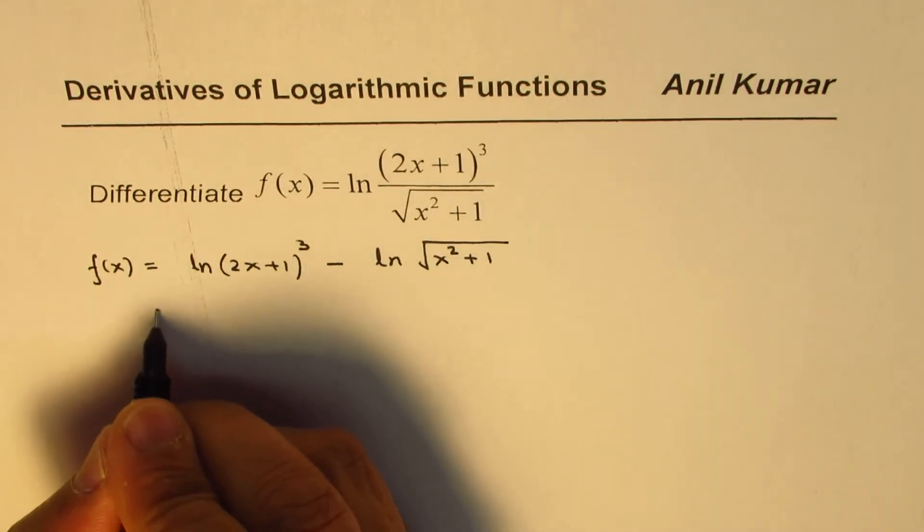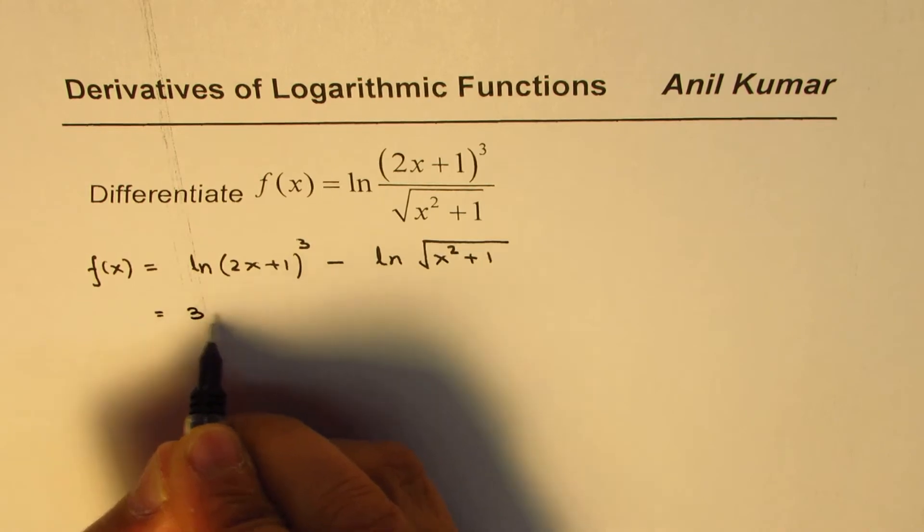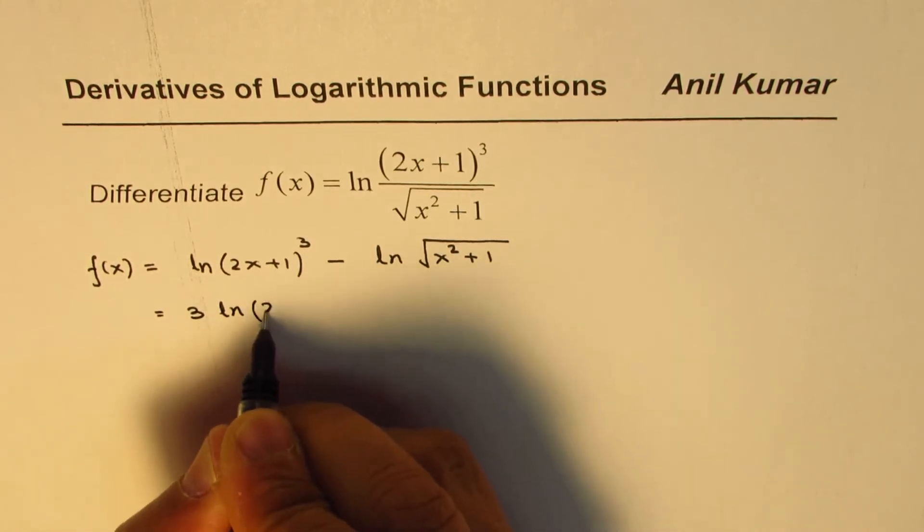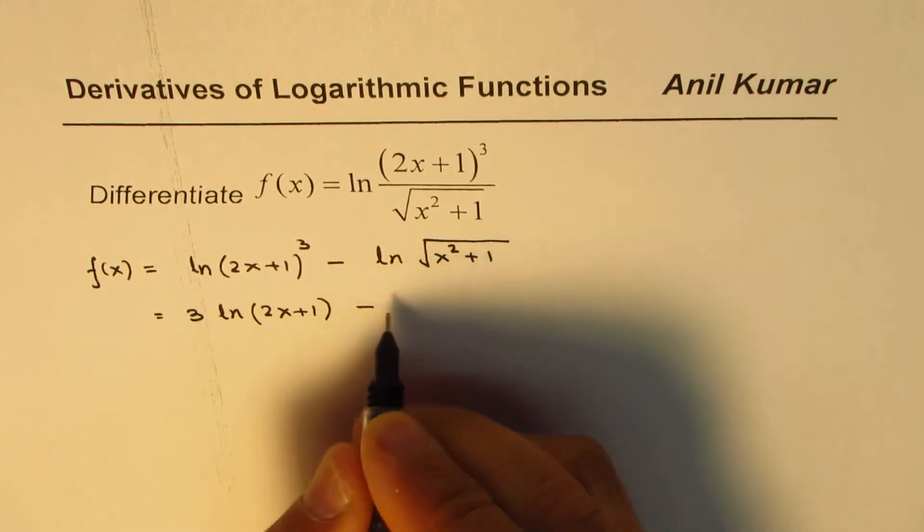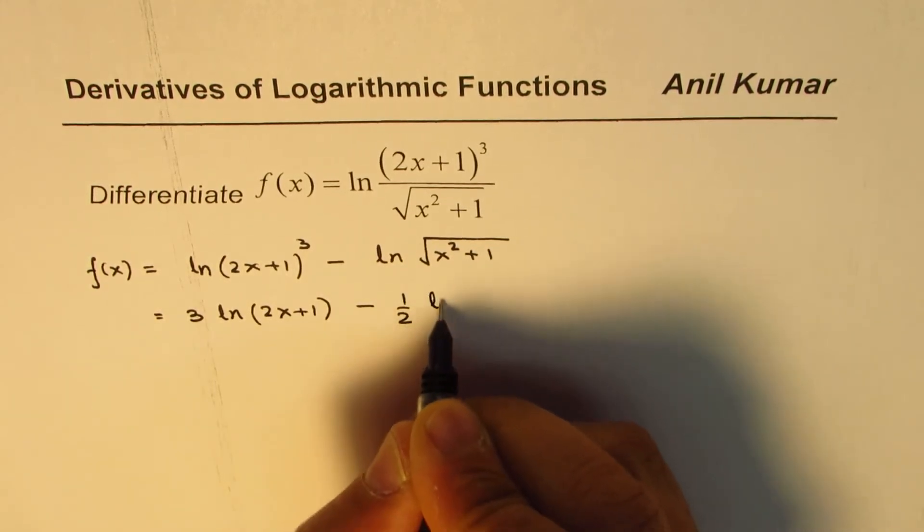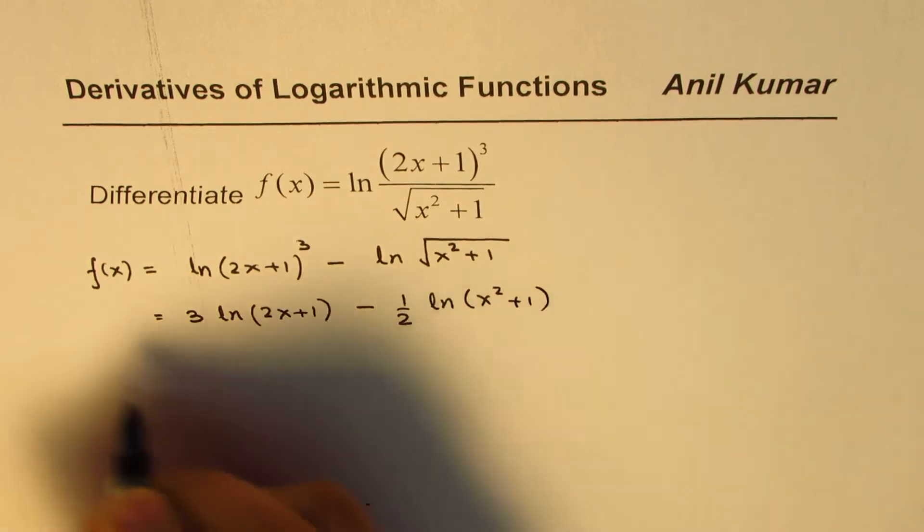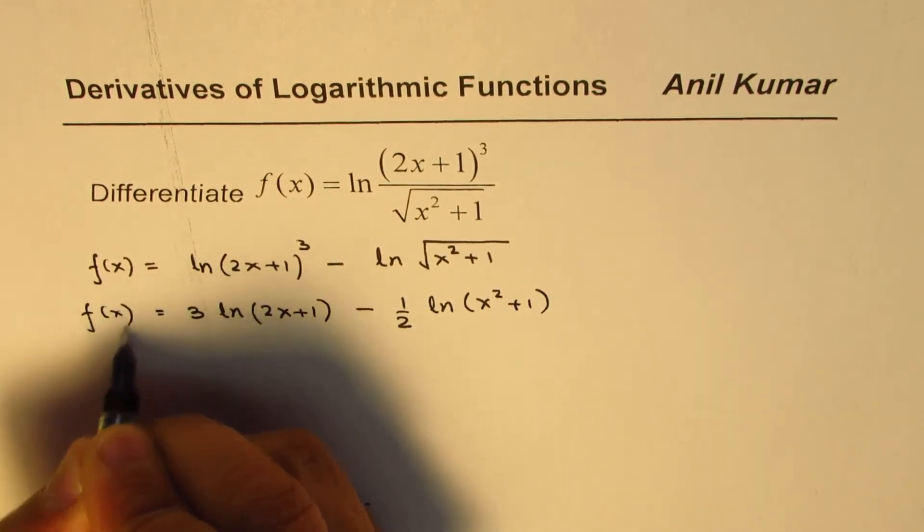Now here we can apply the power rule for logarithms. It gives you 3ln(2x+1) - (1/2)ln(x²+1). That is the function f(x).